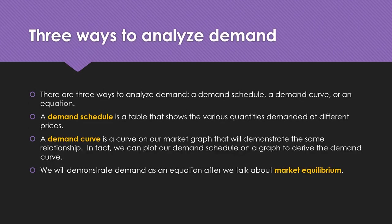There are three ways to analyze demand. The first is the demand schedule — a table with two columns: prices and quantities demanded at those prices. We can take that data and plot it on a graph, connecting the dots to get a demand curve. The demand curve is where most of our analysis occurs. The third way is mathematically through equations, which we'll use when we talk about market equilibrium.